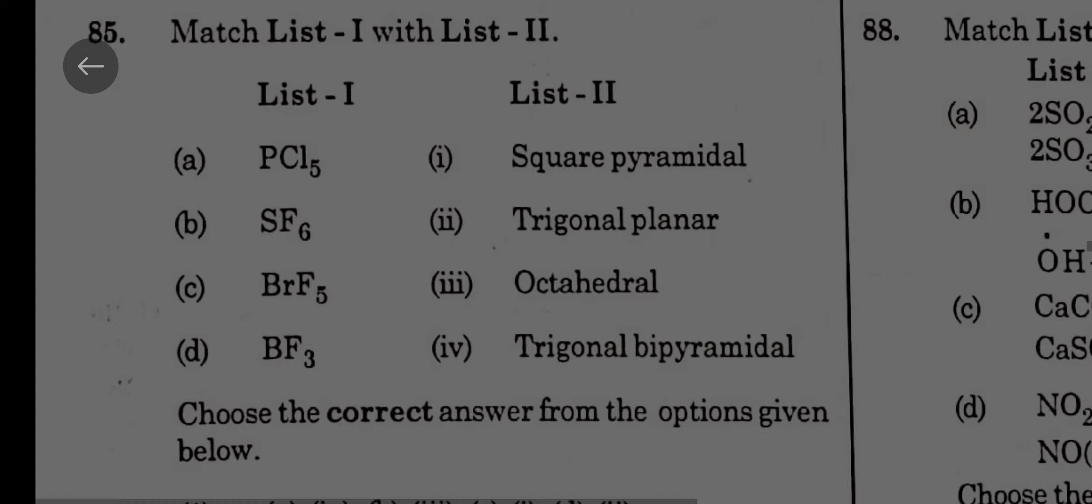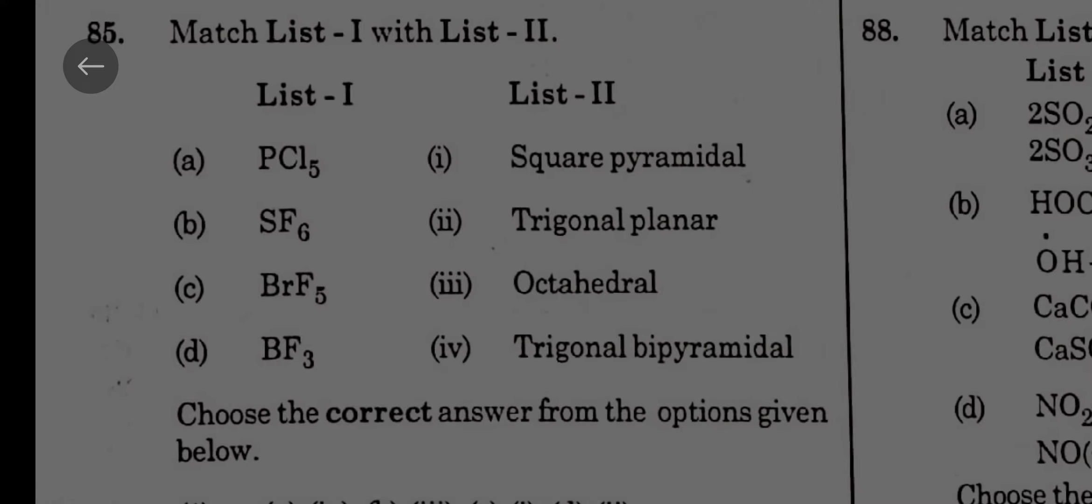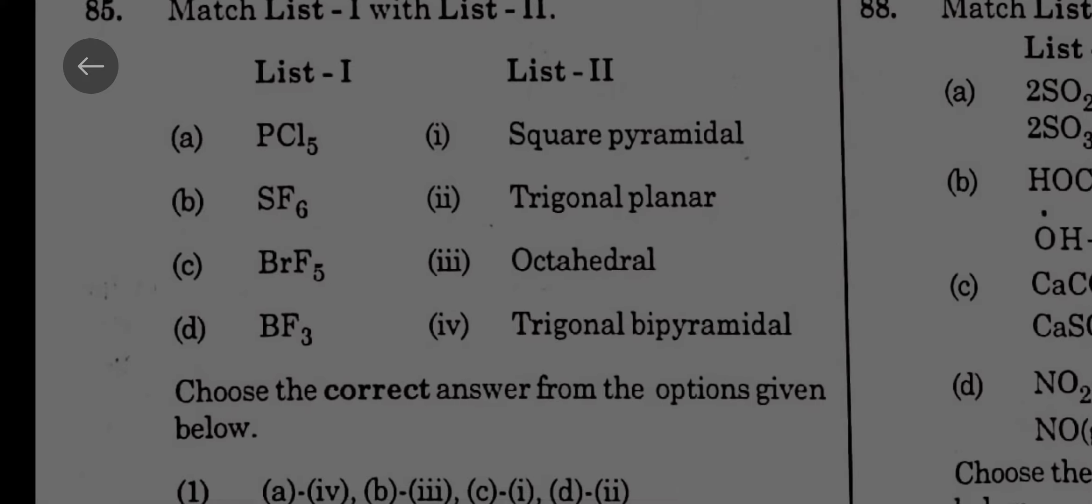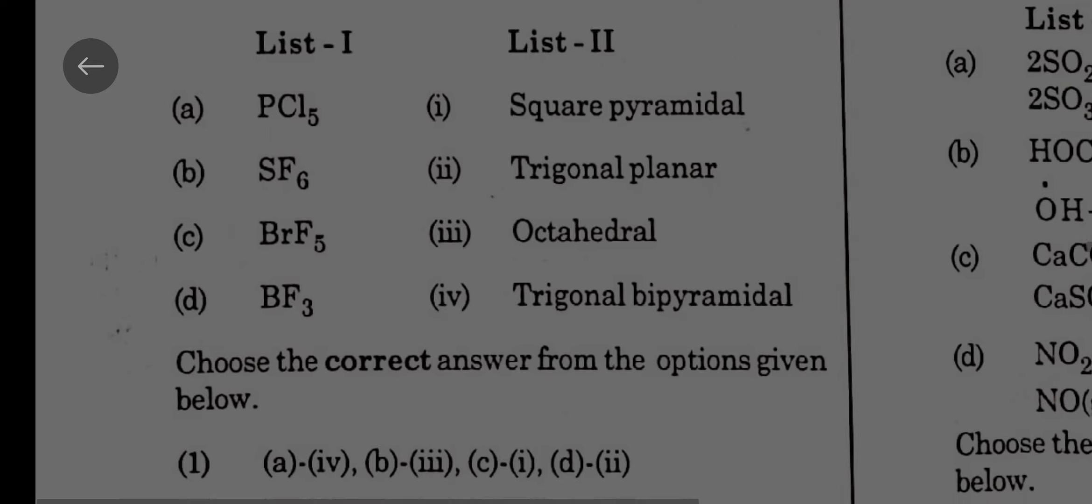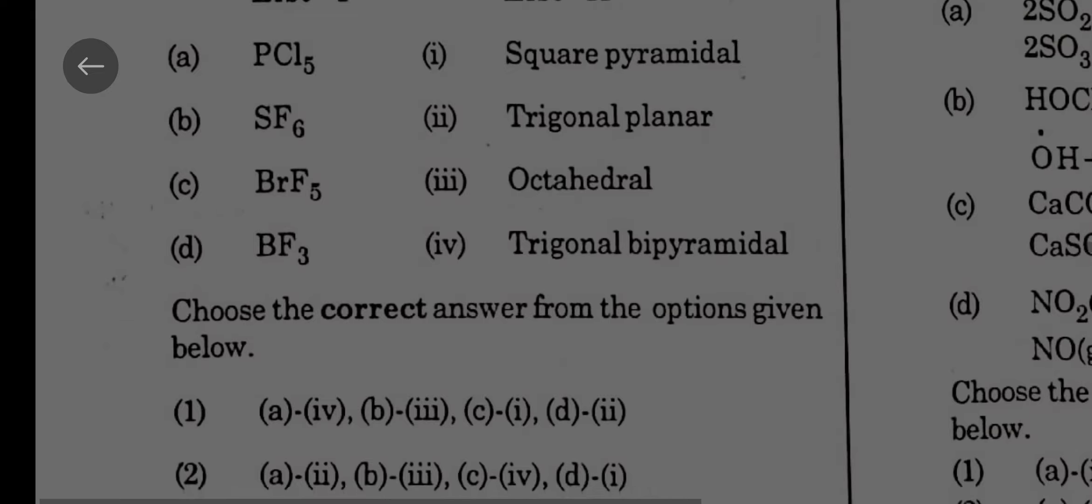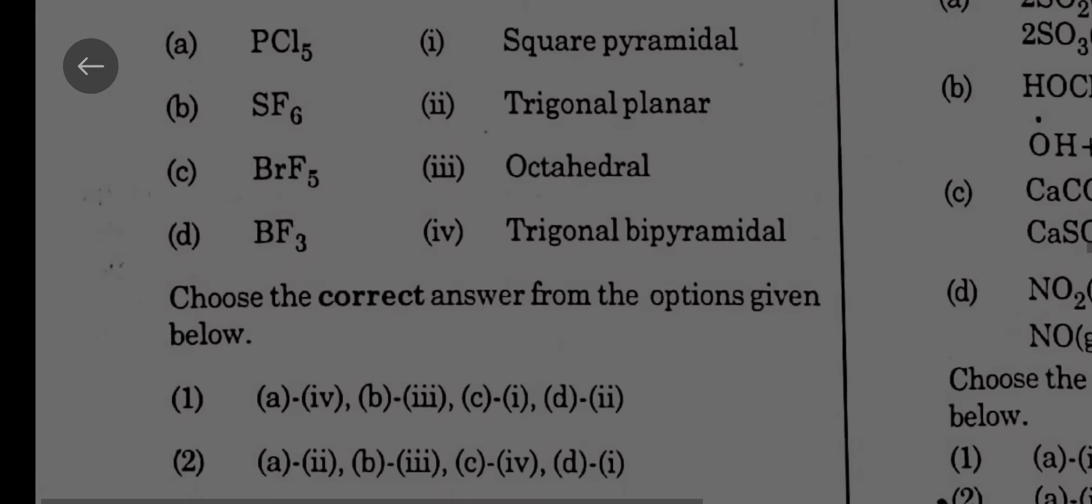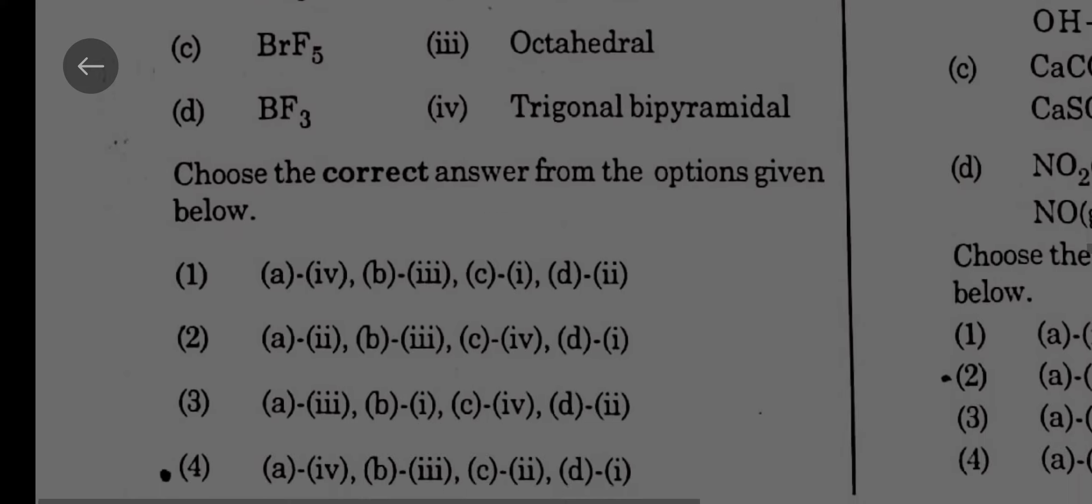PCl5 is trigonal bipyramidal, SF6 is octahedral, BrF5 is square pyramidal, BF3 is trigonal planar. PCl5 trigonal bipyramidal, so A should be 4. Then SF6 octahedral, B should be 3. BrF5 is square pyramidal, so C should be 1. So option 1.